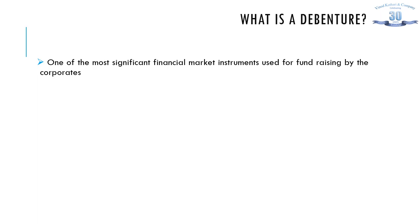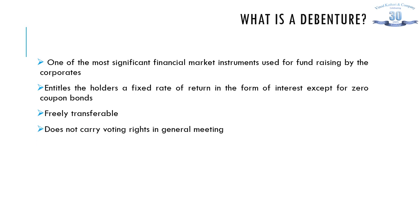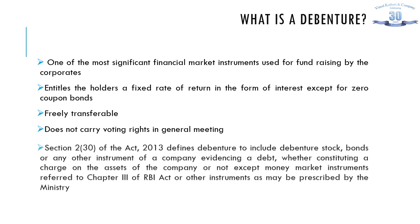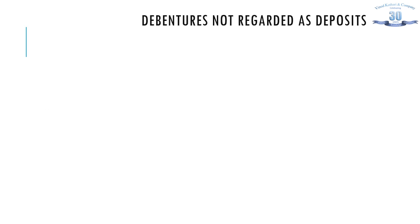A debenture is one of the most significant financial market instruments used for fundraising by corporates. It entitles the holders a fixed rate of return in the form of interest, except for zero coupon bonds. Debentures are freely transferable and don't carry voting rights in a general meeting. Section 2(30) of the Companies Act 2013 defines debentures to include debenture stock, bonds, or any other instrument of a company evidencing a debt, whether constituting a charge on the assets of the company or not, except money market instruments referred to in Chapter 3 of the RBI Act or any other instruments as may be prescribed.